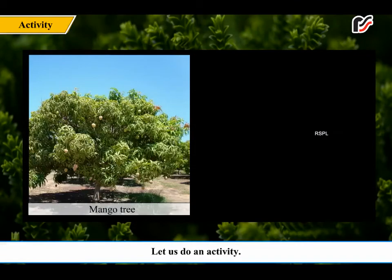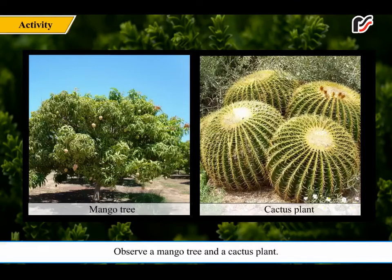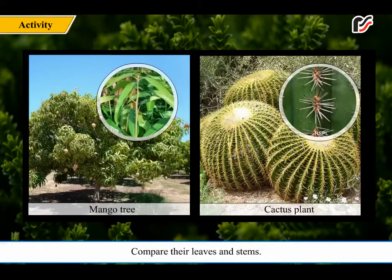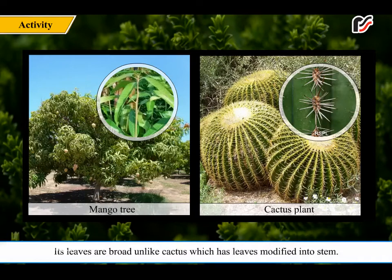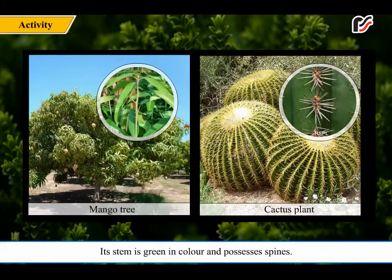Let us do an activity. Observe a mango tree and a cactus plant and compare their leaves and stems. The mango tree has a green stem and its leaves are broad, unlike the cactus which has leaves modified into spines. The cactus stem is green in color and possesses spines.